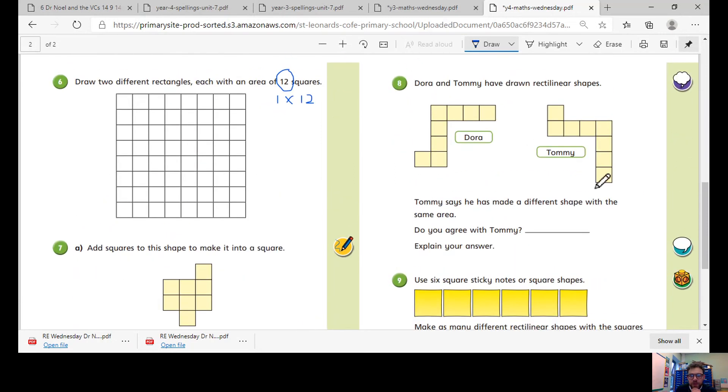Number eight, Dora and Tommy have drawn rectangular shapes. Tommy says he has made a different shape with the same area. Do you agree with Tommy? Explain your answer. So think about how our shapes are viewed. Have they been turned? So if I turn it a certain way, will it look exactly like Dora's? Have a little think.